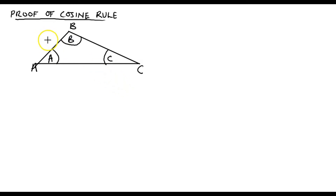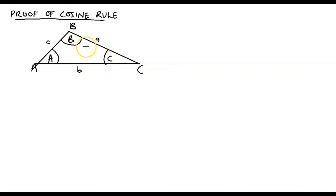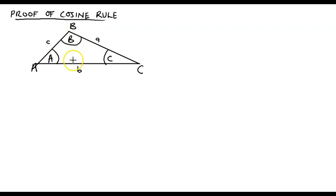The corresponding sides are small c, small a, and small b. If you take a critical look at triangle ABC, you realize that it is not a right-angle triangle, and therefore this is where the cosine rule comes in to show the relationship between the three sides of the triangle and the corresponding interior angles.